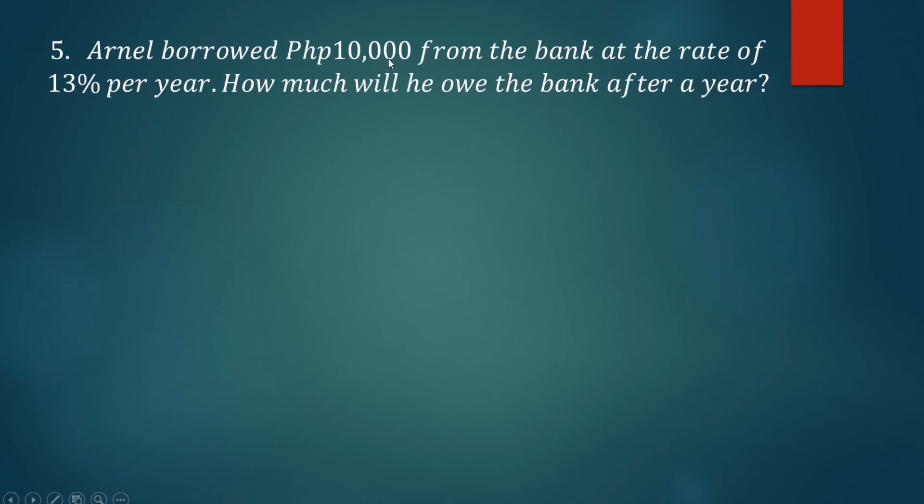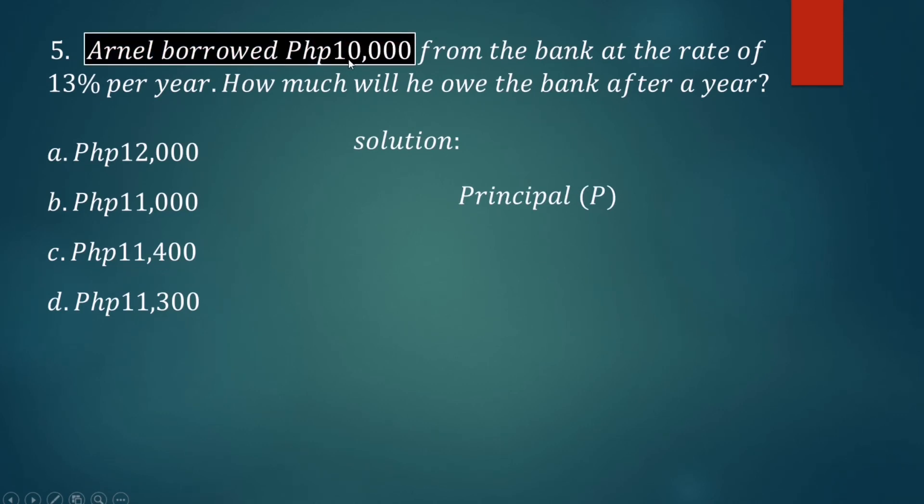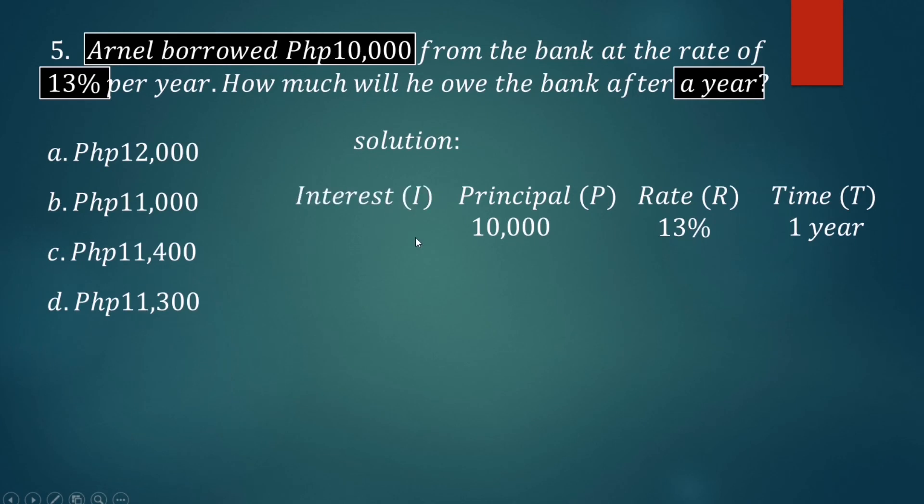Number five: Arnold borrowed 10,000 pesos from the bank at the rate of 13% per year. How much will he owe the bank after a year? A) 12,000 pesos, B) 11,000 pesos, C) 11,400 pesos, D) 11,300 pesos. The principal, which is the amount borrowed by Arnold, is 10,000 pesos. The rate, usually written in percent form, is 13%, and the time is one year. Since he borrowed 10,000 pesos, we need to find the interest after a year. We can use the formula: principal multiplied by rate and time. Substitute the principal 10,000 pesos and the rate - we need to convert to decimal, move two places to the left - 0.13 multiplied by one year.